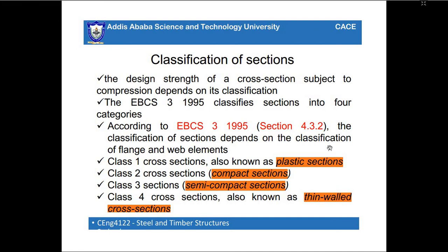The design of a cross section subject to compression depends on its classification. According to EC3 1995, cross sections are classified into four categories: Class 1 is the plastic section, which uses the plastic moment resistance; Class 2 is compact sections; Class 3 is semi-compact sections; and Class 4 is thin-walled cross sections.